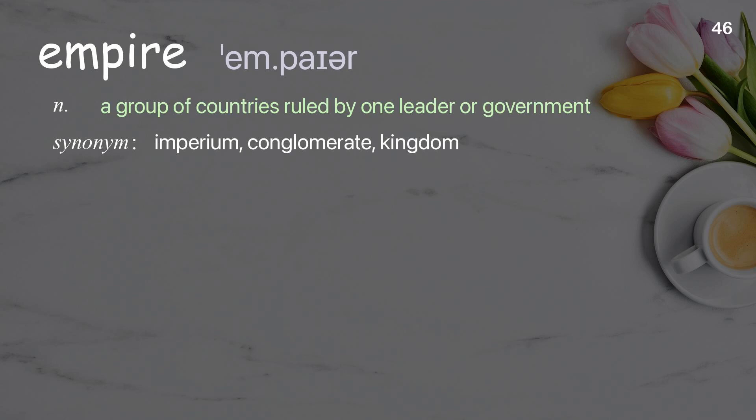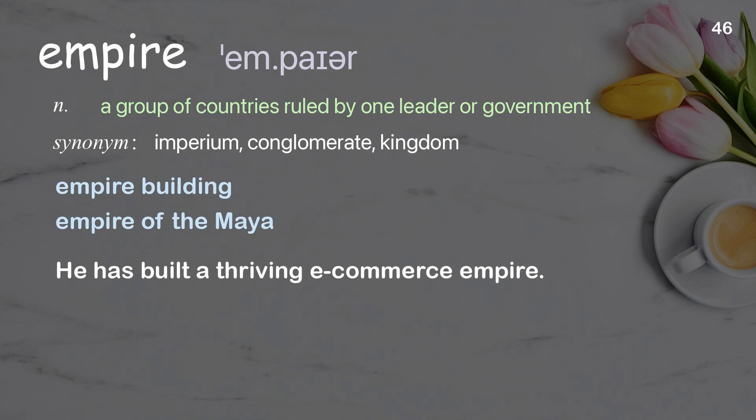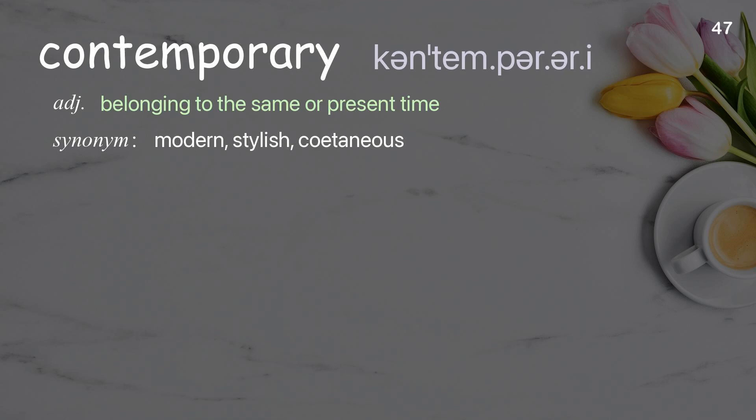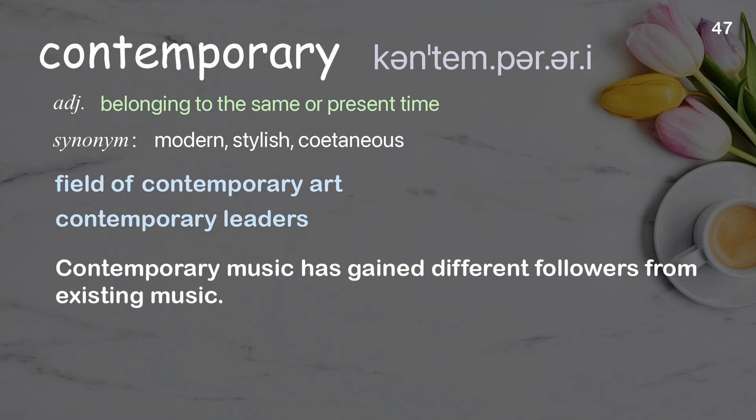Empire: a group of countries ruled by one leader or government. Examples: field of contemporary art; contemporary leaders. Contemporary music has gained different followers from existing music.